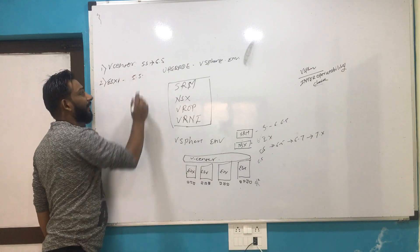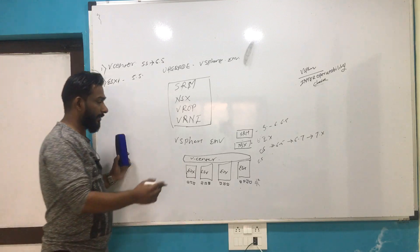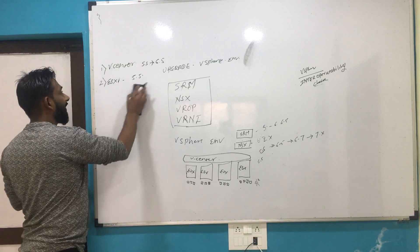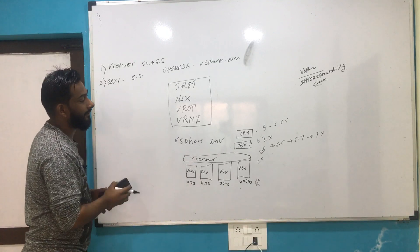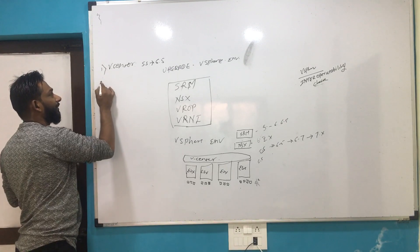I'll post the link for the interoperability matrix from where you can get that. So ESXi will be on 5.5. How do you do the ESXi upgrade once your vCenter is upgraded? Most environments have SRM and NSX as well.